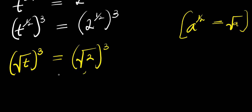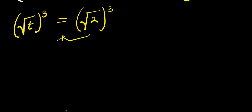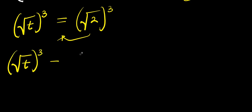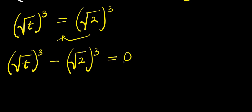So right here we can form a cubic equation. Moving terms to one side, we have the square root of t raised to the power of 3, minus the square root of 2 raised to the power of 3, equals 0.